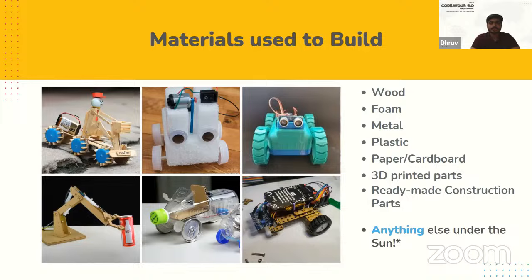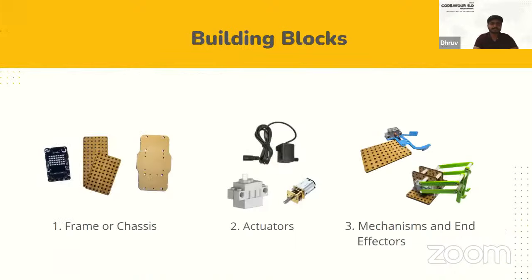You can build your robot or project using materials available to you — for example, wood, foam, metal, plastic, paper or cardboard, 3D printed parts, readymade construction parts, or anything else you have around you. Just make sure you don't use anything harmful to yourself or others. A robot can be made of several building blocks. The three major blocks are: first, the frame or chassis; second, actuators; and third, mechanisms and end effectors.